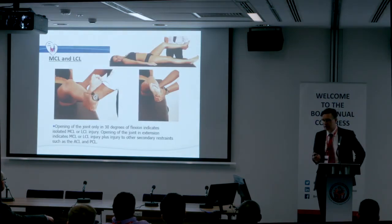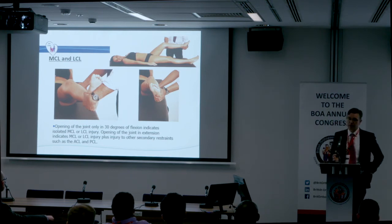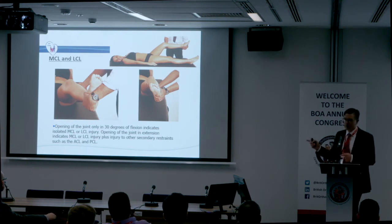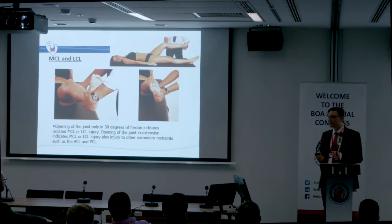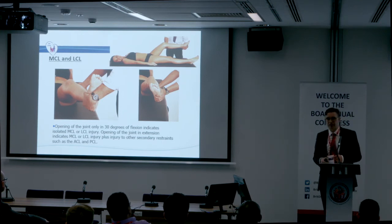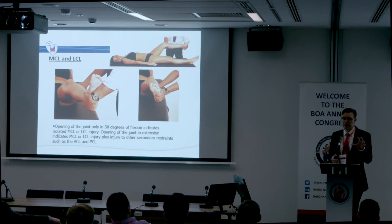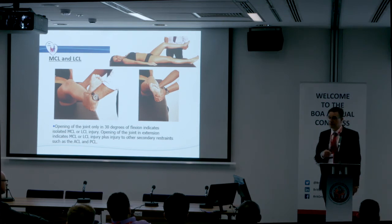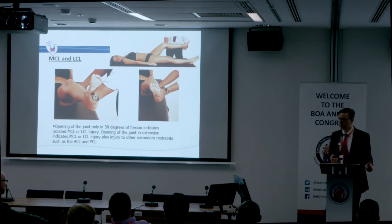Then we move on to the collateral ligament examination. The medial collateral ligament is easy — anyone can examine it. In full extension, if you've got instability, that means it's a combined injury. In 20 degrees of flexion — not 30, that's not the deliberate mistake — assess for laxity and end point. The lateral collateral can be done in various ways, but you can easily make a mess of it. I think that's one of the discerning things in the examination — how you examine the lateral collateral. It depends on your size and the patient's size. Get a good way of examining the lateral collateral, because you can look odd.